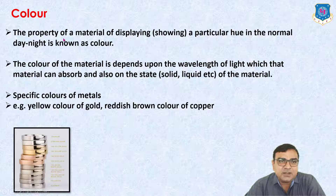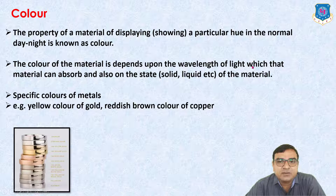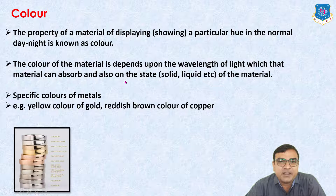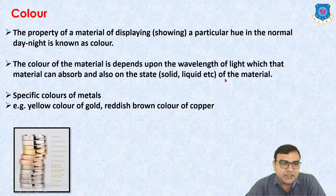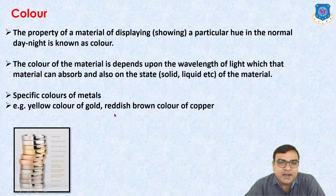Color: the physical property of a material of displaying a particular hue in normal daylight is known as color. The color of the material depends upon the wavelength of light that the material can absorb and also on the state — solid, liquid, etc. — of the material. Specific colors of metals: for example, the yellow color of gold, and the reddish-brown color of copper.